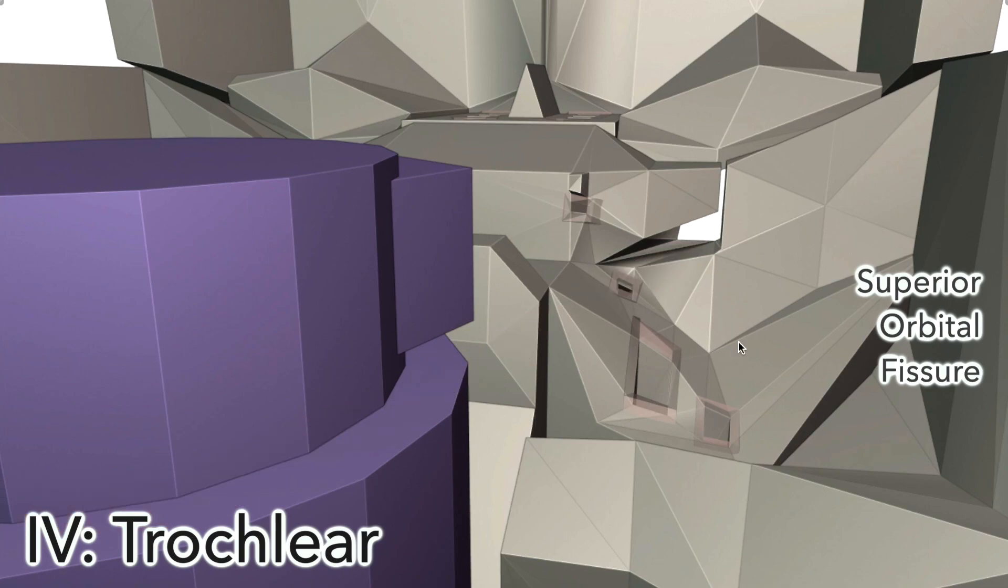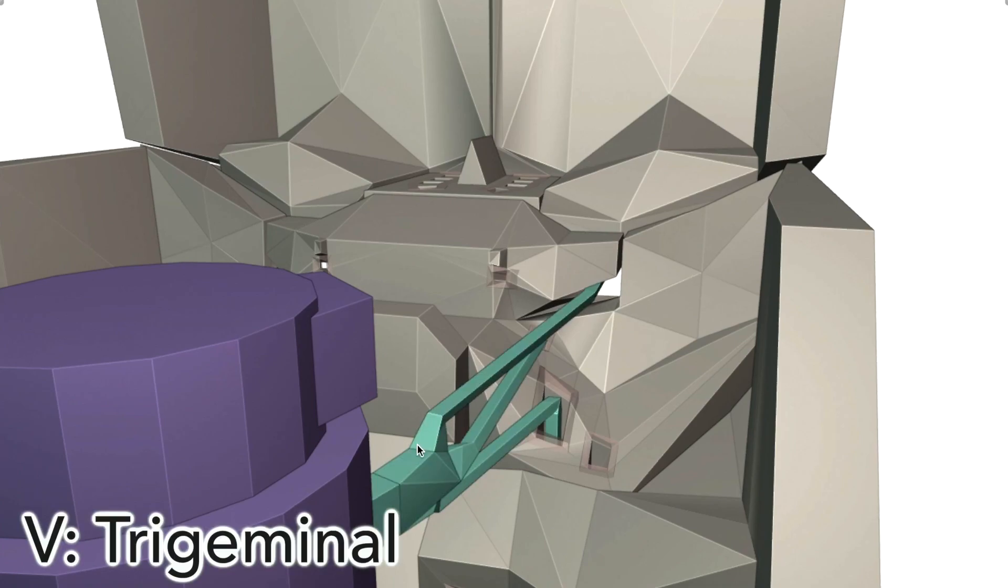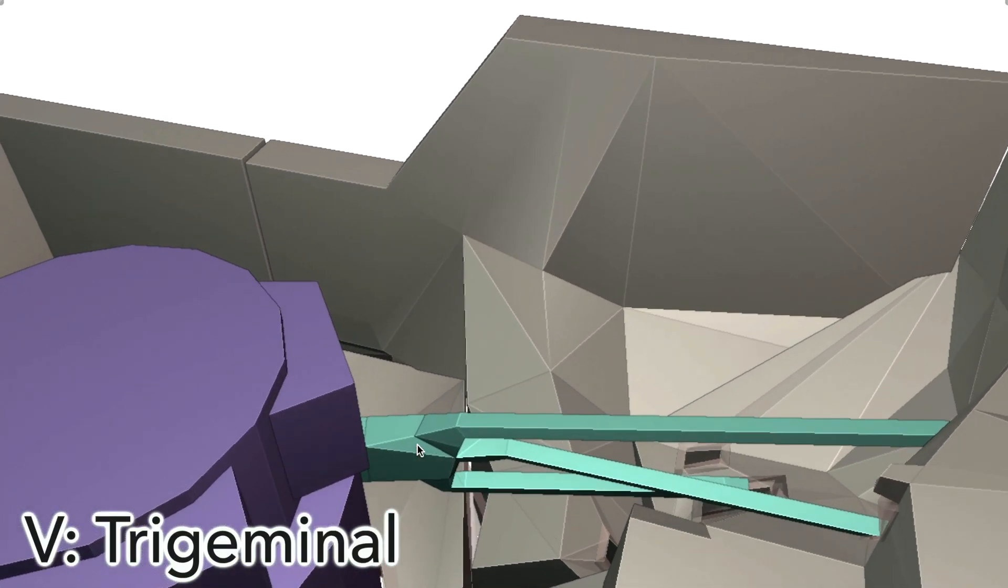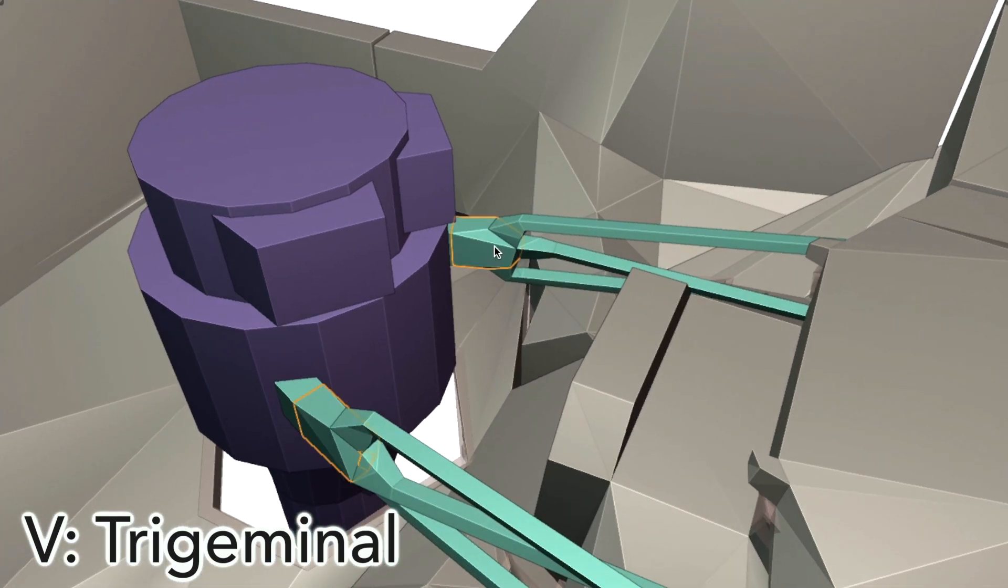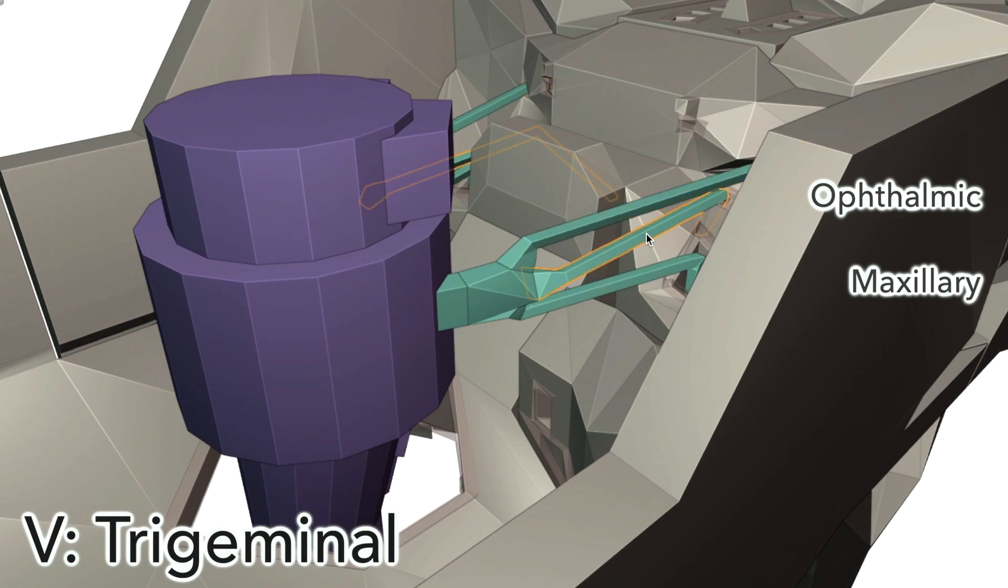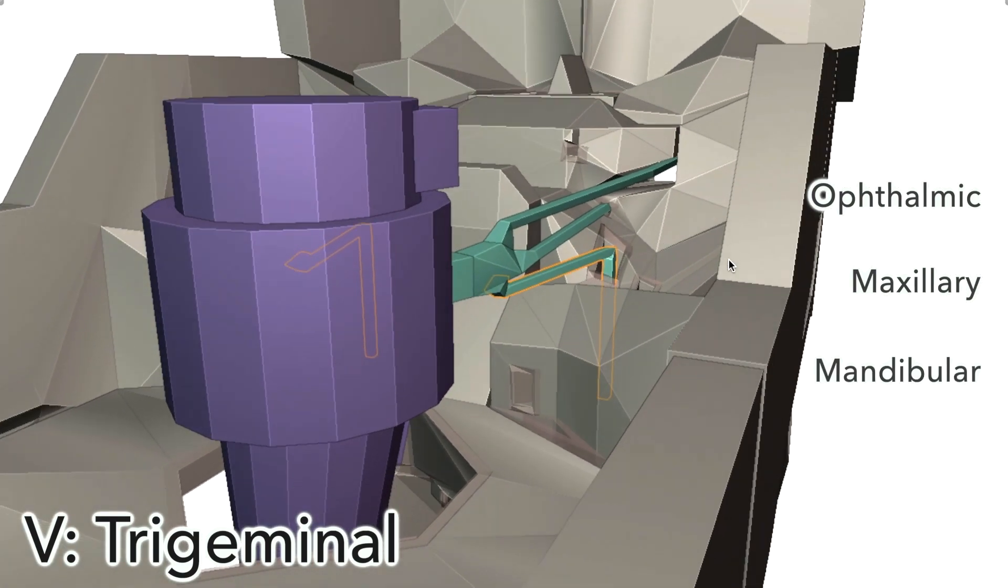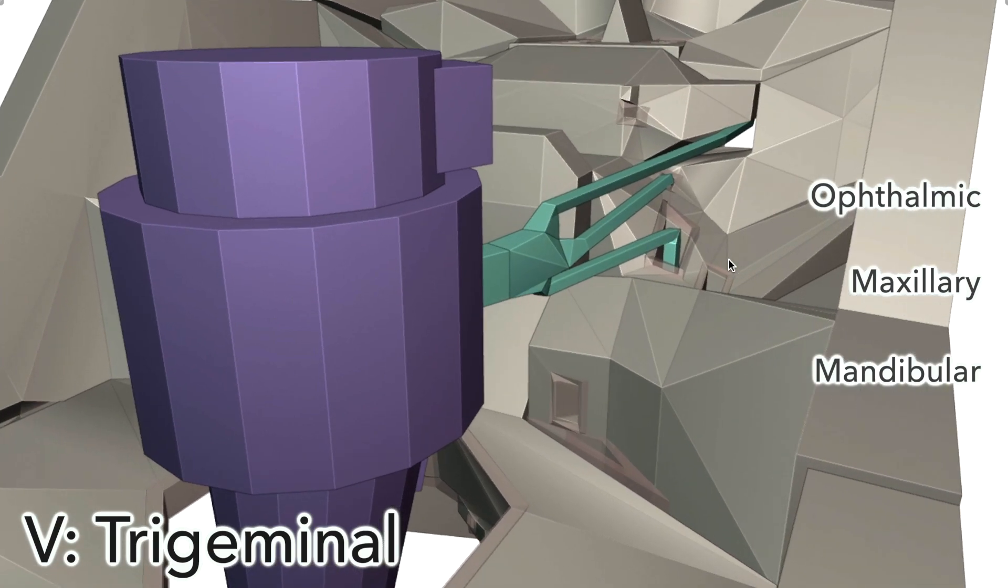Number five is the trigeminal nerve, which is slightly more complex. It originates from the side of the pons and immediately forms this trigeminal ganglia, from where it divides into three separate branches. We have the ophthalmic, maxillary, and mandibular. It's got these three branches, and this of course is why it's called the trigeminal nerve.